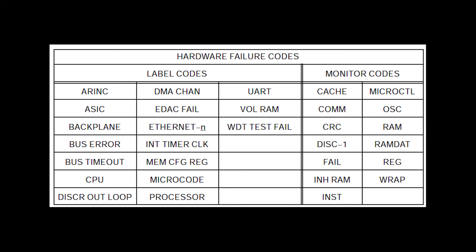When this happens, carry out an FMC BIT per the AMM. If the results are good, no further action is required. However, if in doubt, perform a maintenance download and send the data to GE. Only after this point should removing and replacing the FMC per the AMM be considered.